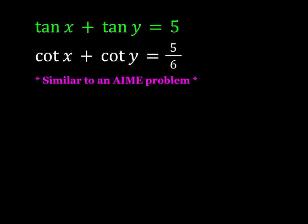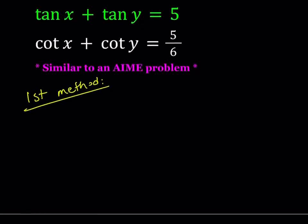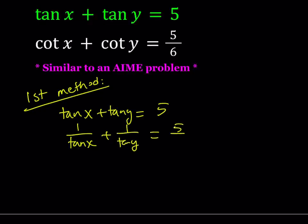I'll be presenting two methods. Let's start with the first one. My first method basically involves using the reciprocal property of cotangent and coming up with an easily solvable system. So we can write cot x as 1/tan x, and 1/tan y, and that is going to be 5/6.